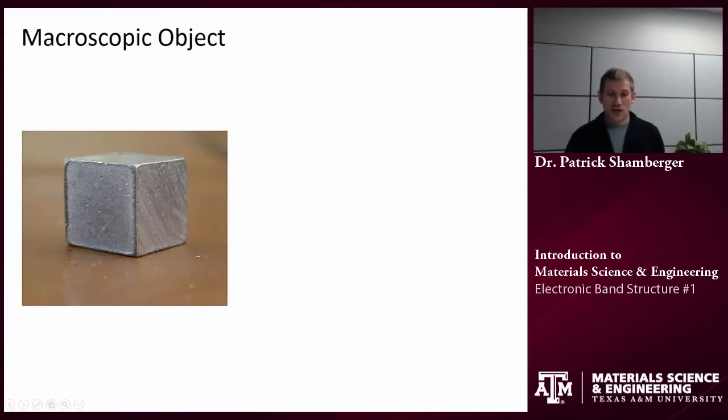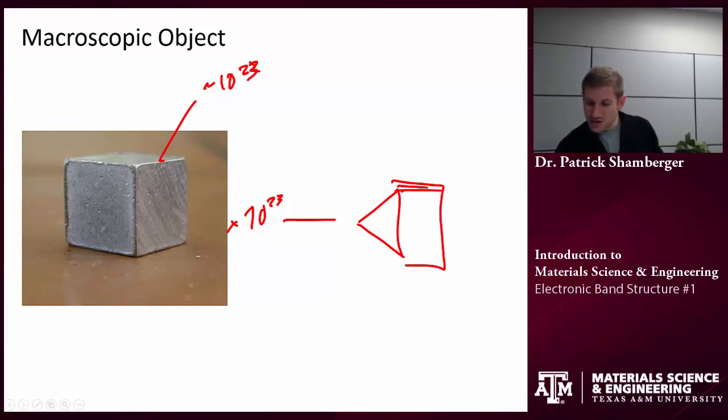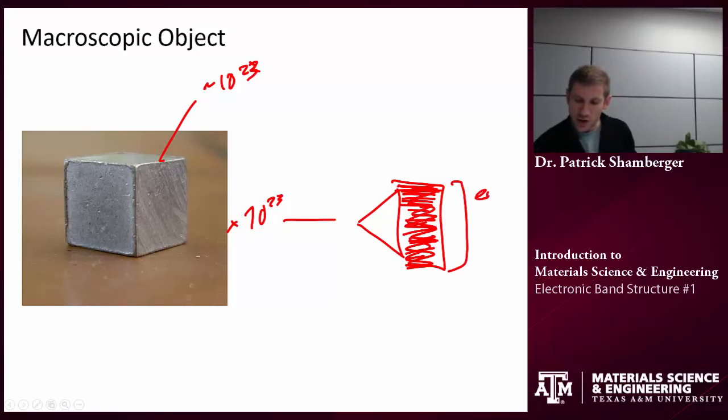If I have a macroscopic object, something that has maybe part of a mole of atoms, maybe it's a full mole of atoms. There's about 10 to the 23 atoms that are interacting here. So I'm going to start off with a large number of 3s orbitals. And again, they're going to split and they're going to be so finely spaced together that I could consider this to be a continuum.